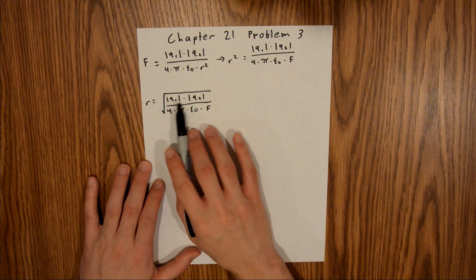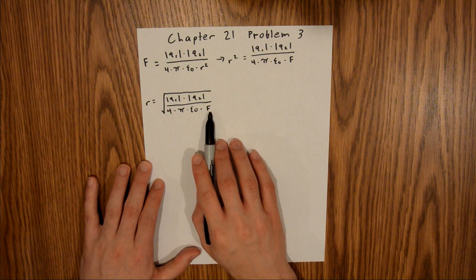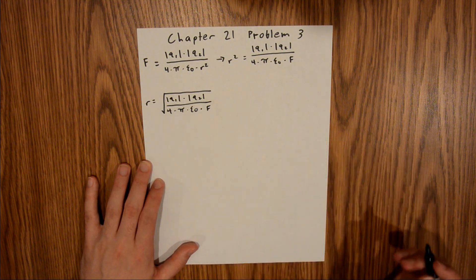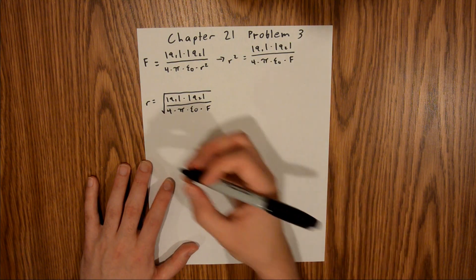In the problem, we are given both of these charges, we're given the force, and epsilon naught is a universal constant, so we have all the values we need to plug in.